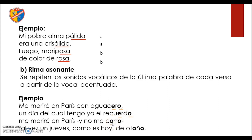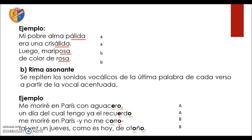En el tercer verso van a ser las vocales O-O, al igual que en el cuarto verso. Vamos a considerarle una letra: en el primer verso, como coincide con el segundo, serán ambos A. Y en el tercero con el cuarto, será B. Ahora, observen que hay vocales en minúsculas y en mayúsculas. Recuerden que hablamos de los versos de arte menor y los versos de arte mayor. Cuando los versos son de arte menor, se colocan las letras en minúsculas; los versos de arte menor son hasta ocho sílabas simétricas. Los versos de arte mayor son a partir de nueve sílabas o más.